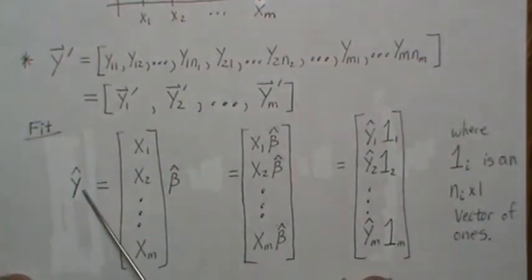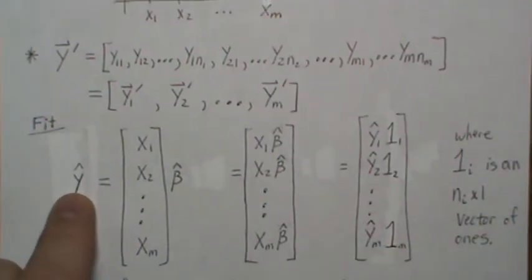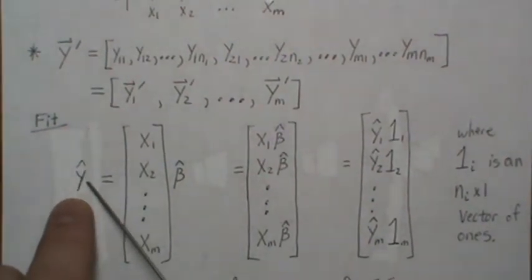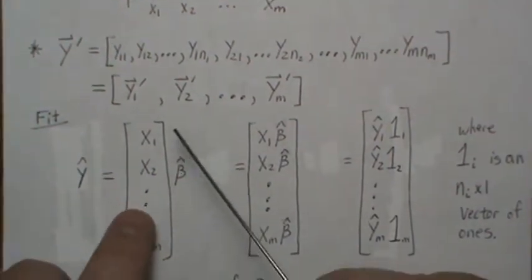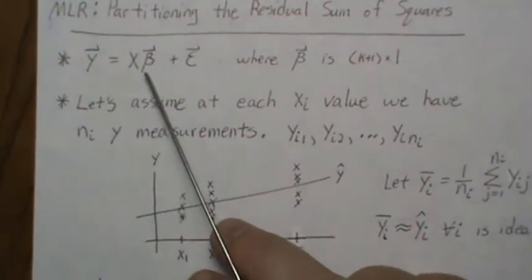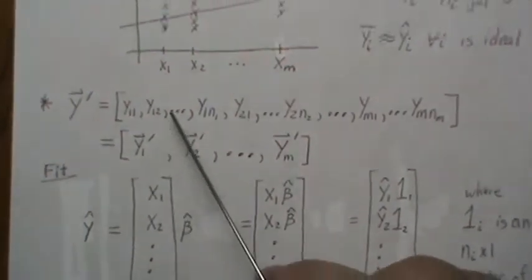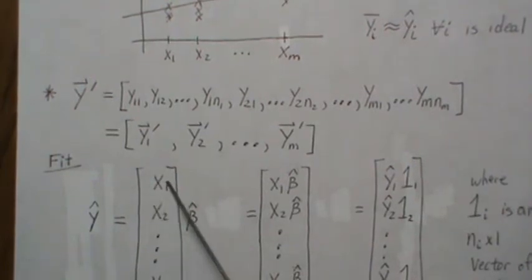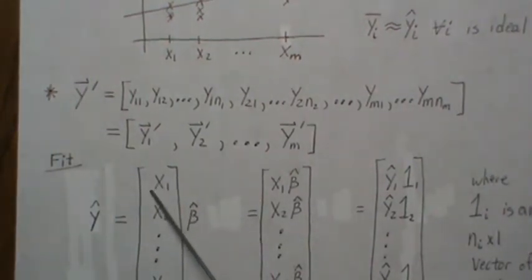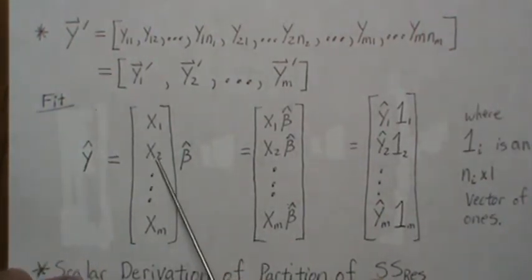The fitted data is represented by y-hat, the least squares fit, which is an n by 1 vector of fitted values. In our new notation, we'd call it y_1-hat, y_2-hat, etc., represented by X*beta-hat. This X matrix has repeats: the first n_1 rows are all the same, corresponding to the same x_1 values - first column of ones, second column all the same, and so on.